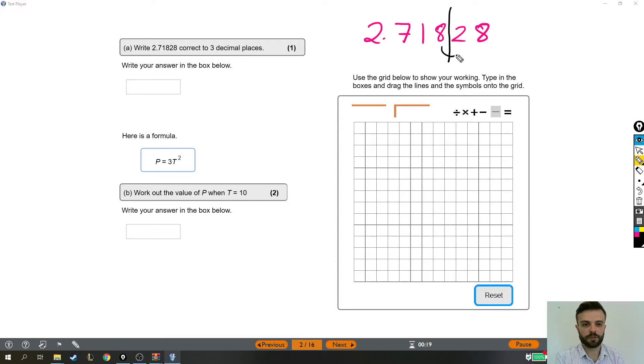And to decide what happens to it, we look at the next number. Now, if this 2 was something big like 9, 8, 7, or 6, or 5, the 8 gets pushed up to a 9. But because the 2 is only small, it does not get pushed up, which means our answer is just 2.718.